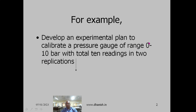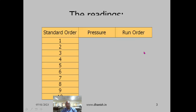The first question is whether 0 should be included or not. It depends on the pressure gauge — for some gauges, a 0 reading may not be possible. If it is possible, we include 0. Here we assume 0 is not possible, so we need total 10 readings.